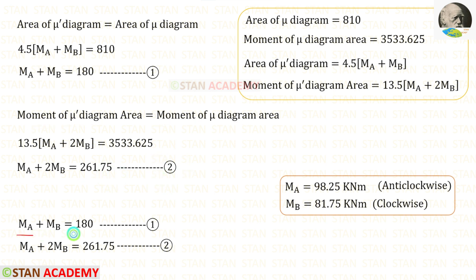Now we solve the two equations using a calculator. MA = 98.25 kN·m and MB = 81.75 kN·m.